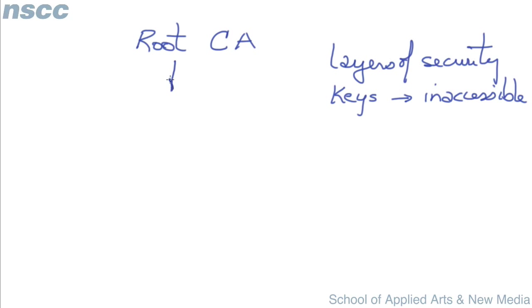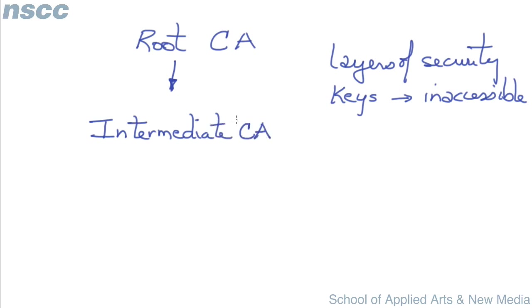So we often use a stand-in or proxy for the root certificate, something called an intermediate CA. These are entities or organizations that can issue certificates, and whose certificates themselves are signed by a root CA.